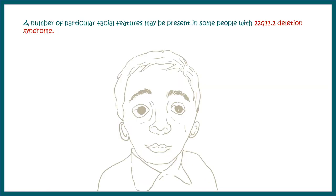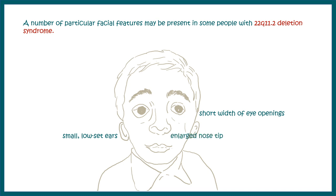Let us look at some facial features distinct to DiGeorge syndrome. A DiGeorge syndrome patient would have small low-set ears, short width of the eye openings, an enlarged nose tip, a hooded eye, and majorly a very long face.